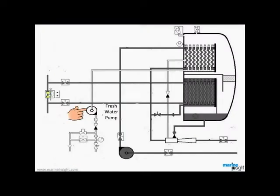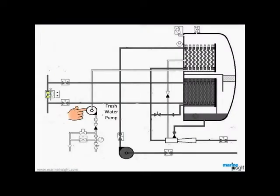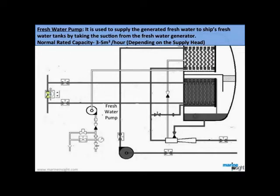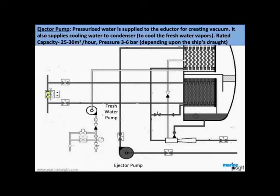The first component of the freshwater generator is a freshwater pump, which is used to supply the generated freshwater to ship's freshwater tanks by taking the suction from the generator. The normal rated capacity varies from 3 to 5 m³ per hour, which depends mainly on the supply head. The next component is the ejector pump, which supplies pressurized water to the eductor for creating vacuum. It also supplies cooling water to condenser. Rated capacity varies from 25 to 30 m³ per hour and pressure 3 to 6 bar.